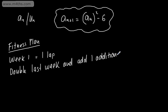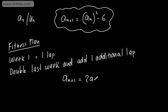We could write this as a recurrence relation. We could say a sub n plus 1 is equal to 2 lots of a sub n plus 1. What we're saying is that the next term is 2 lots of the last one plus 1, and we would say here that a1, the first term, is equal to 1.